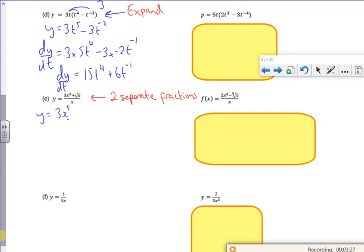So I've got 3x to the 5 over x, so that'll be 3x to the 4. Now root x, that's x to the half, so I've got x to the power 1 over x to the power half. So if you take away your powers because you're dividing, I get x to the power minus 1 half.